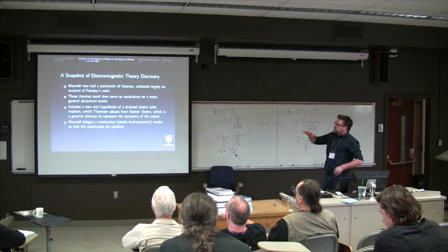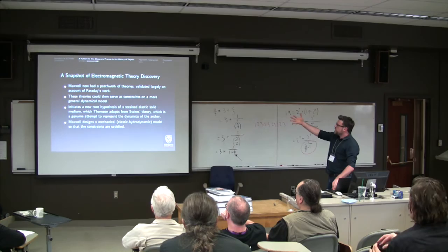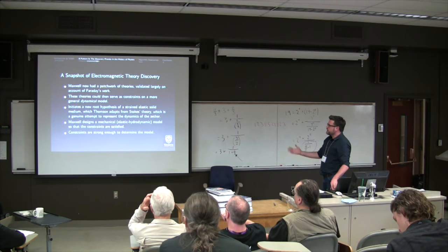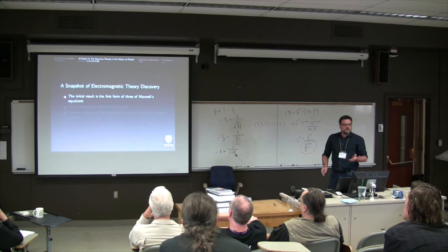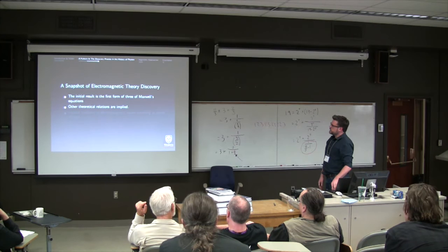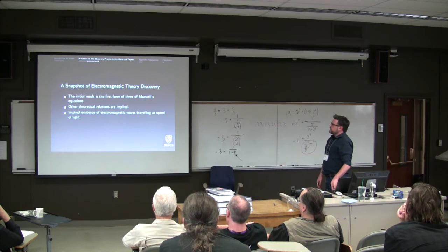Then the next step was to introduce dynamics. So it introduced yet another root hypothesis. So, Thomson did some initial work and then Maxwell famously has this mechanical model that he designed. The properties of the mechanical model so that all of those other piecemeal differential equations would be recoverable. And it turned out the constraints were enough to determine the model. So the initial result was the first form of three of Maxwell's laws. Other relations are implied. It's the equation involving a displacement term. And famously implied the existence of electromagnetic waves traveling at the speed of light.